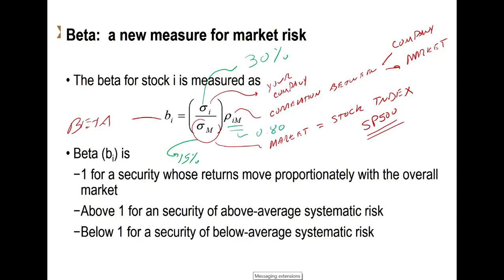What does it mean to be 100% correlated? It means that whatever happens to the market, if it changes by a certain amount, you're always going to change by a proportional amount, always in the same way. It doesn't have to be a one-to-one, but it always has to be the same proportion. So every time the market goes up by 10%, if you always go up by 4%, then when the market falls by 10%, you always fall by 4%. If you always follow that relationship, then you're going to have 100% correlation.